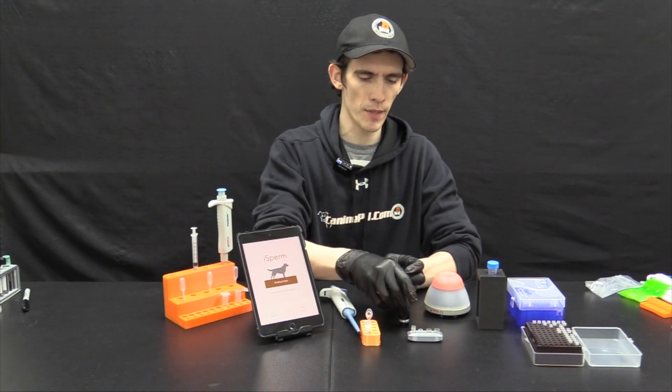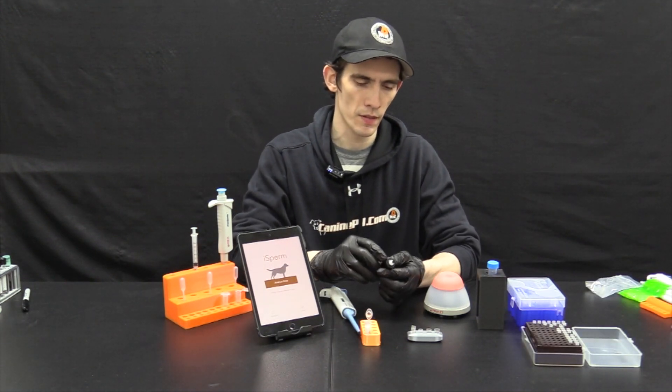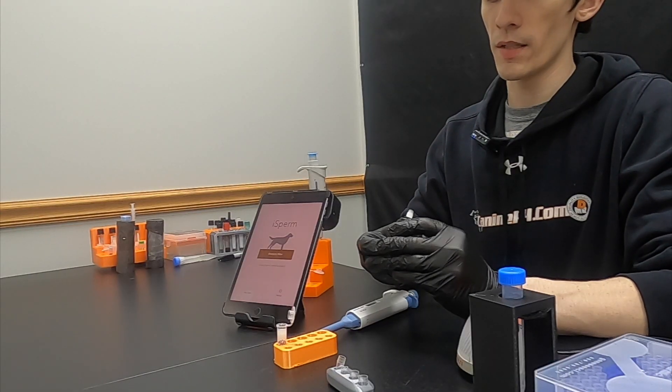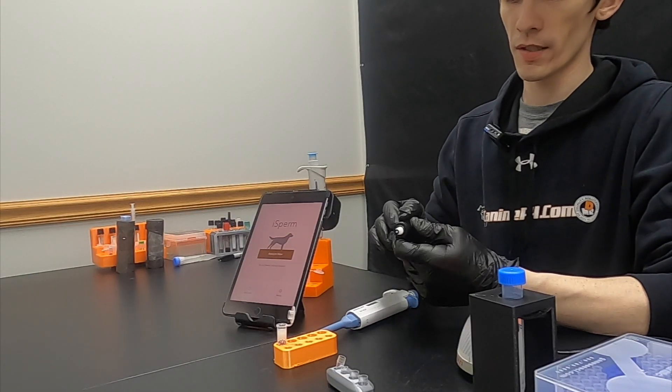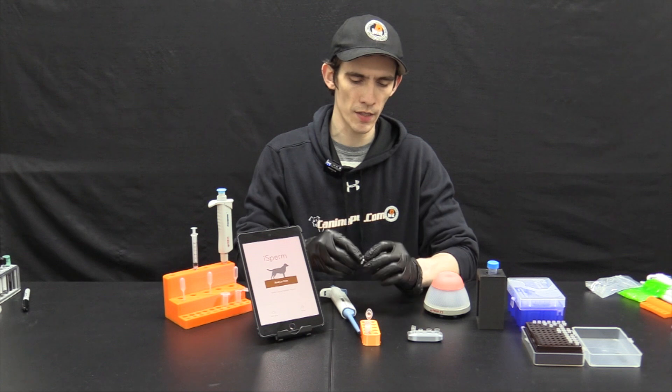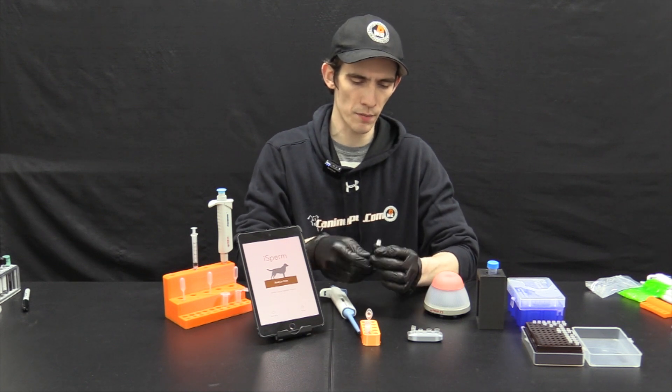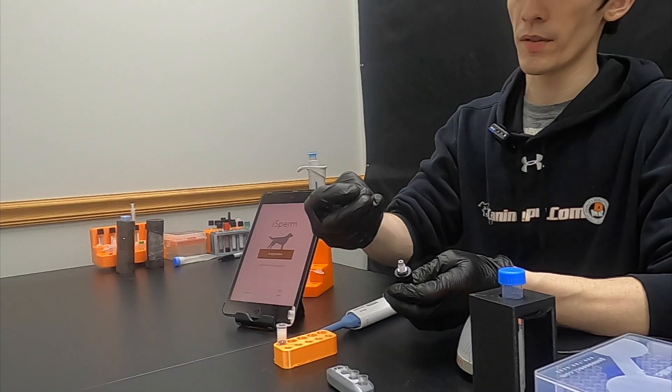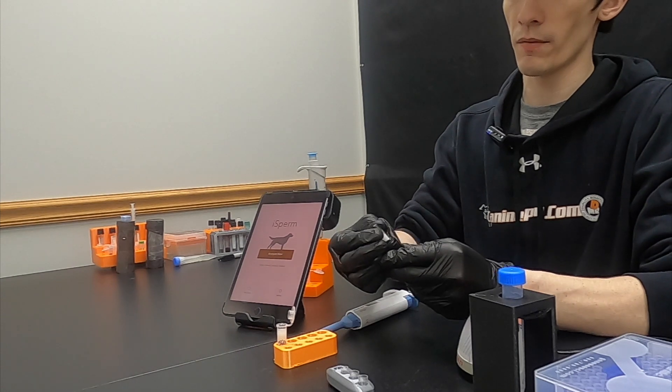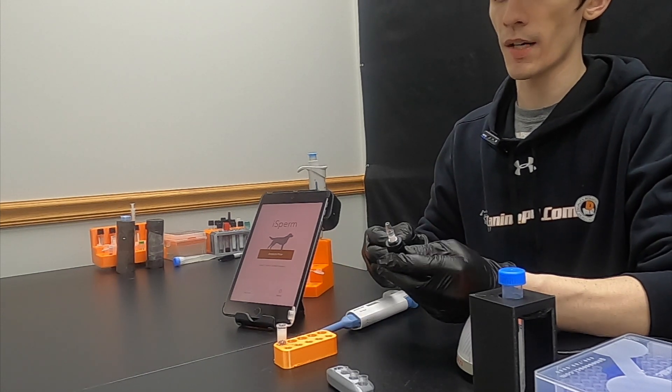So first to do that we'll remove the sample collector from the iSperm. Double check quick that the batteries have not run out and that your light is visible. If not, you will need to take off the casing and replace the batteries. And we'll put the base chip of the iSperm chipset firmly on the top.